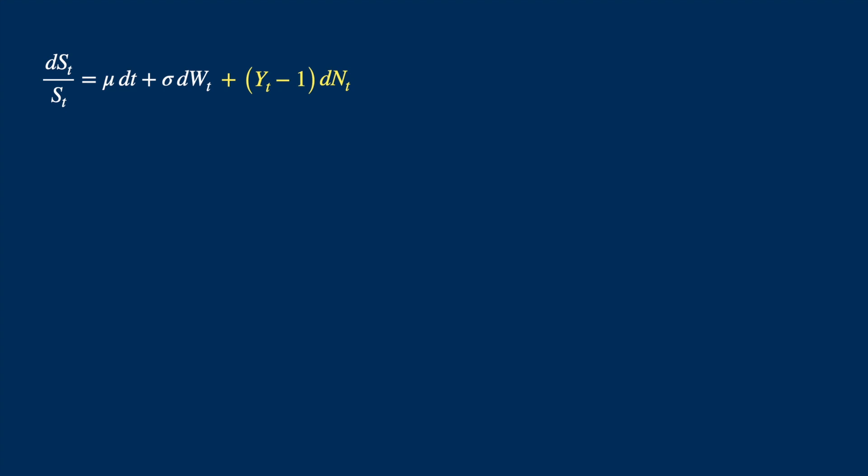We have the Merton dynamics, well almost. We need a couple of more things. Firstly, the jump component will introduce a drift as well. It is easy to see if you take expected value of the jump.